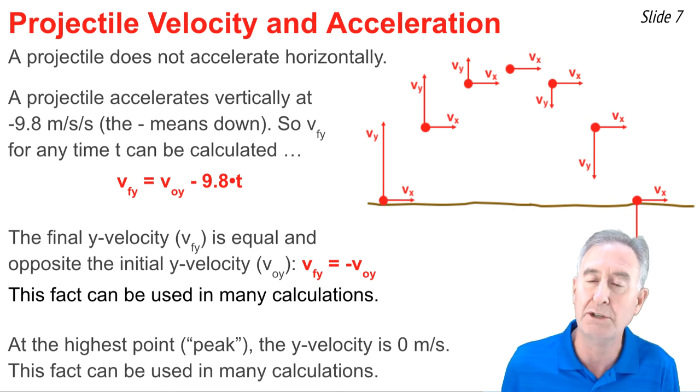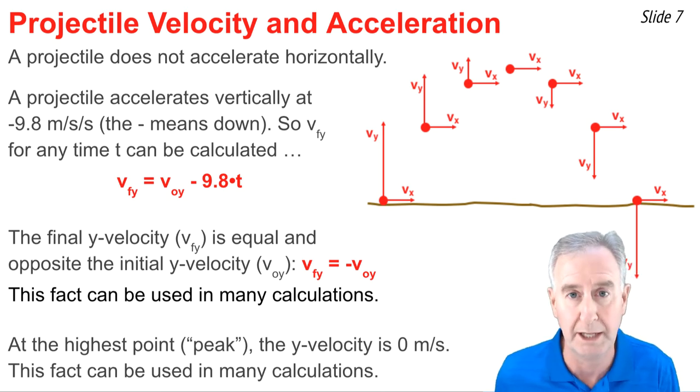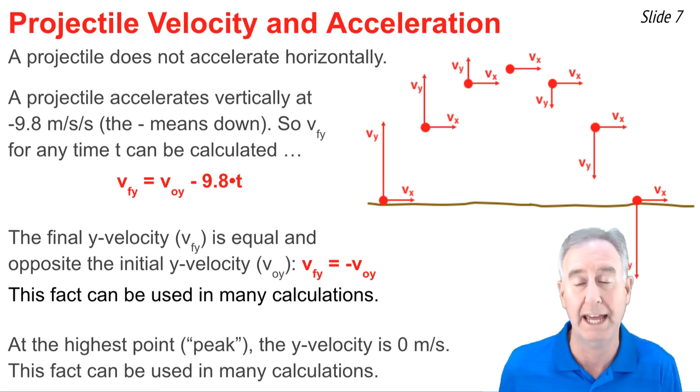And then finally, you need to recognize that the highest point of the trajectory, the so-called peak, there's no y component of velocity. The vy at that point happens to be zero meters per second.